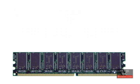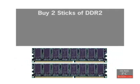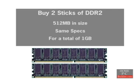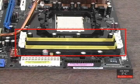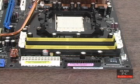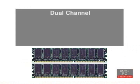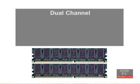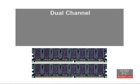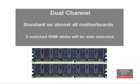When you buy RAM for your new computer, we recommend you get two sticks of DDR2 memory, 512 megabytes in size, with the same specifications, for a total of 1 gigabyte. Since most motherboards have four available slots to add memory, you'll have two more slots available for adding memory in the future should you need to. The reason for using two sticks of memory is so that you can enable dual channel on the motherboard. Dual channel combines the two sticks of memory to double their bandwidth and increase the speed at which the RAM is accessed. Dual channel support is standard on just about every motherboard made today, and the motherboard will detect the matched set of RAM sticks and enable dual channel automatically in most cases.